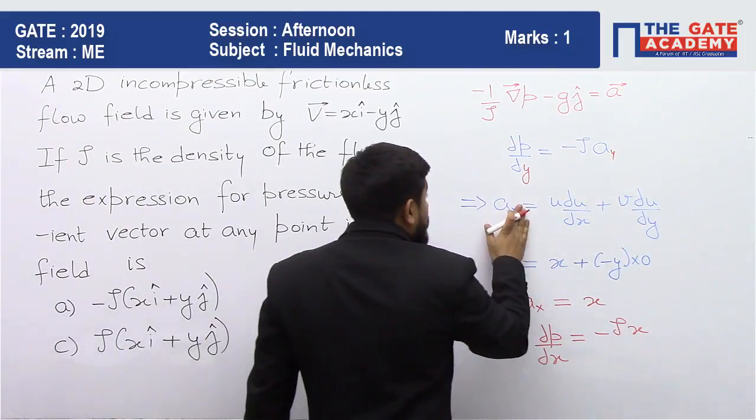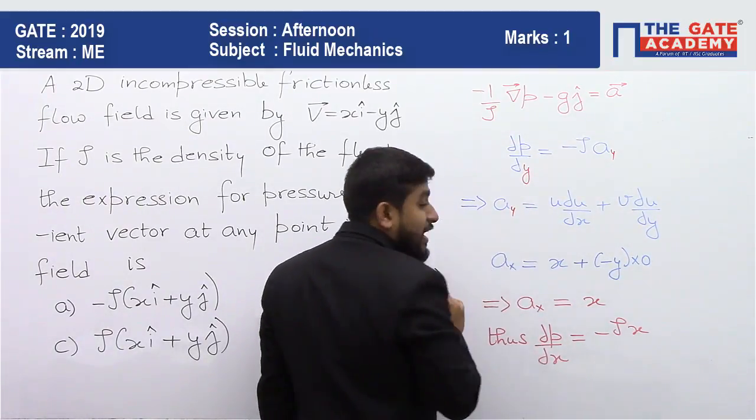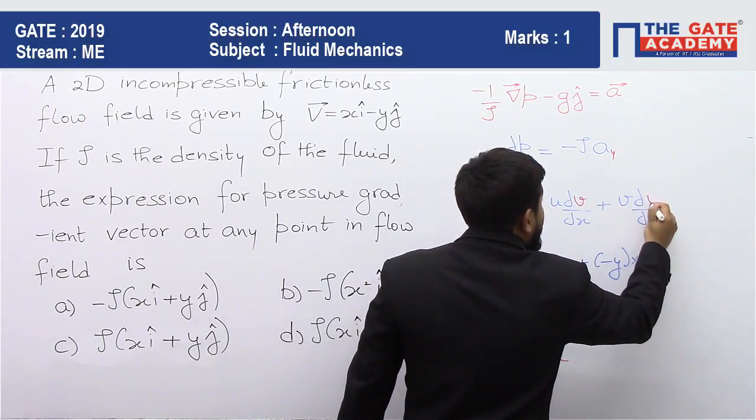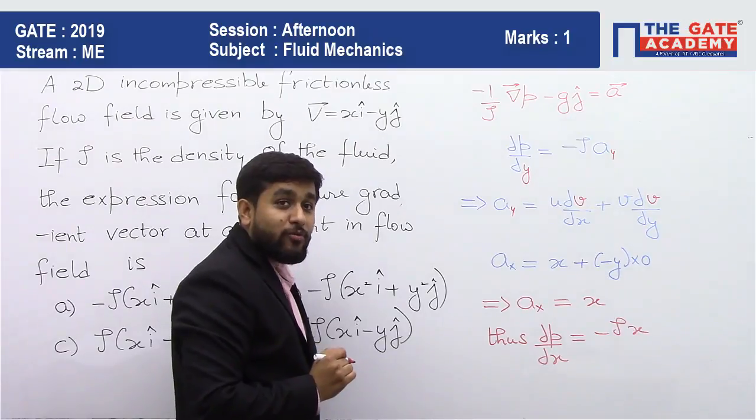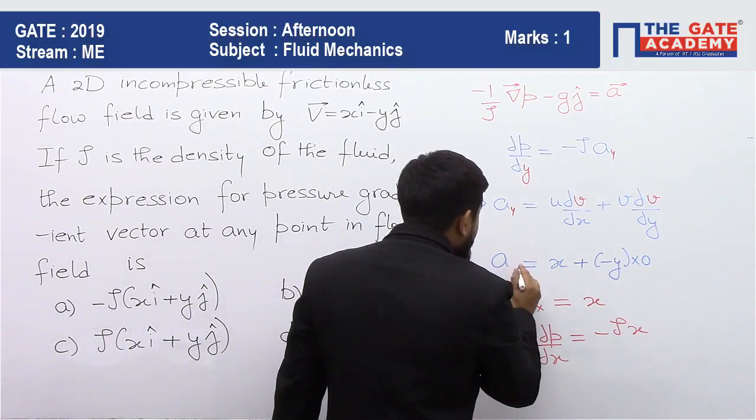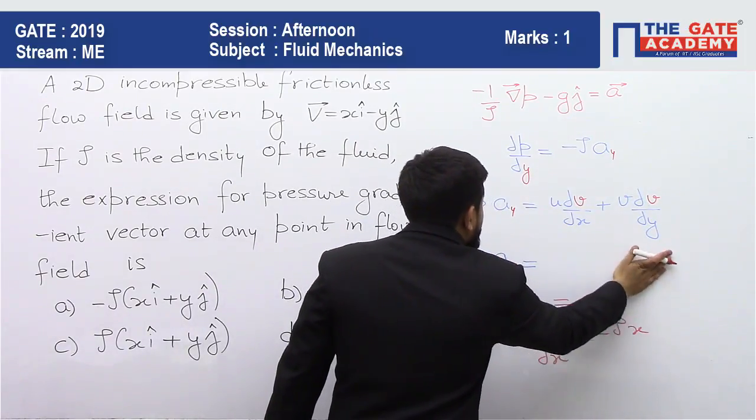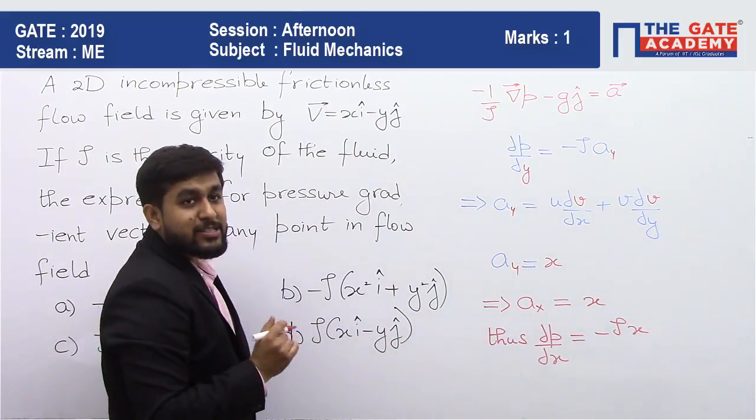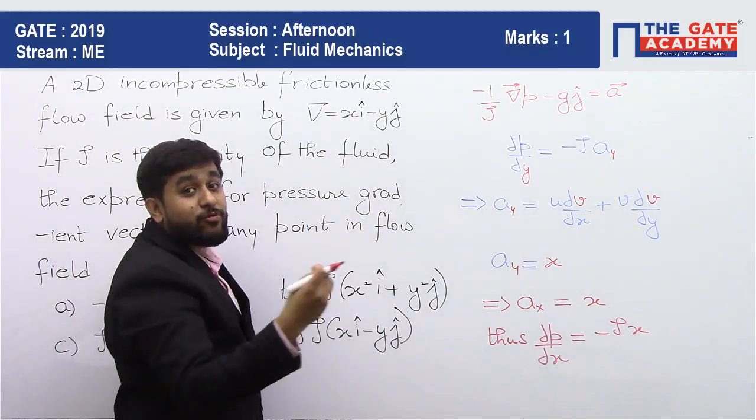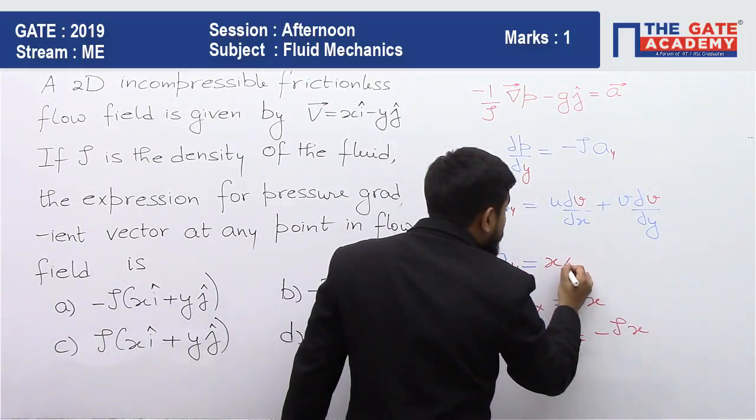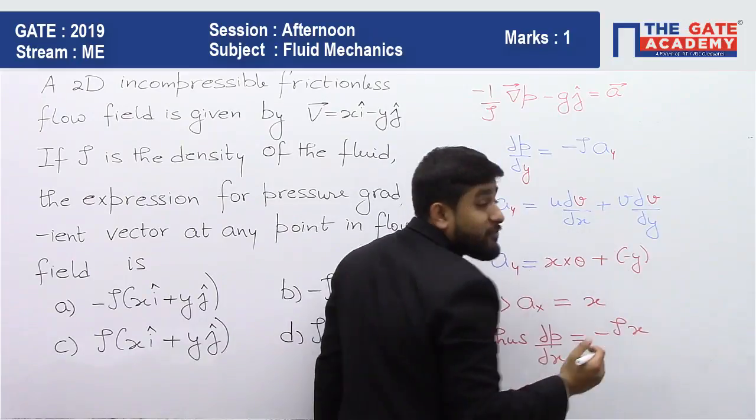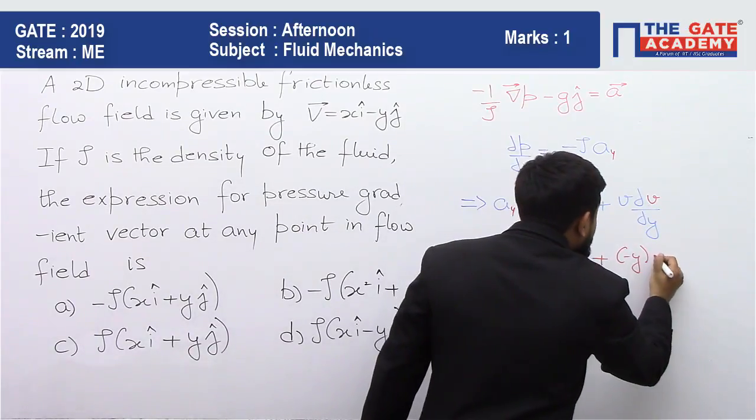So acceleration along the y direction will be written as a y which is equal to u del V by del x plus v del V by del y. So when you are talking of your ay, I think your u, your u is simply equal to x and del V by del x, V is minus y. So what is del V by del x? It is 0. Plus v which is minus y into del V by del y. I think this will be minus 1.